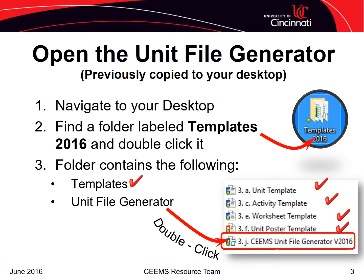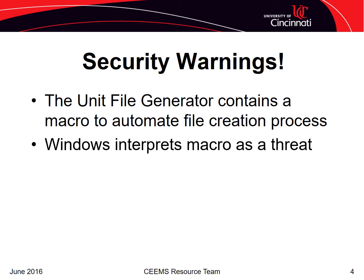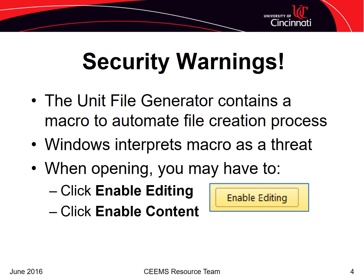You might pause this tutorial now so that you can take a look at the Templates 2016 folder, review the folder contents, and open the unit file generator. In order to automate some of the tasks within the unit file generator, a small program or macro was developed. Unfortunately, Windows interprets this macro as a threat and requires you to enable the macro prior to using the workbook. When you open the unit file generator, you may need to click on Enable Editing and Enable Content near the top of your screen. Once you enable it, you are ready to begin using it.